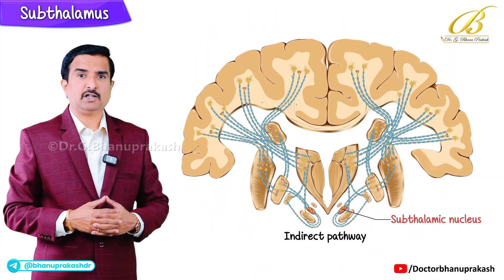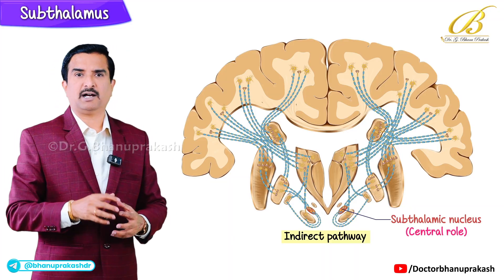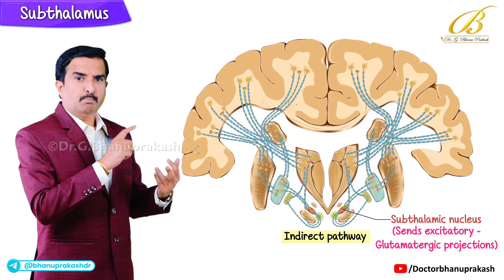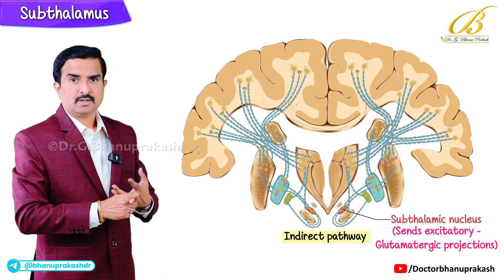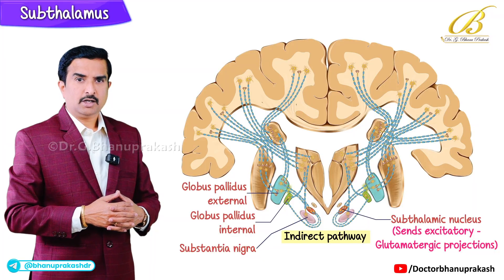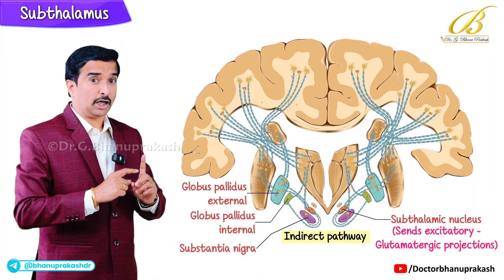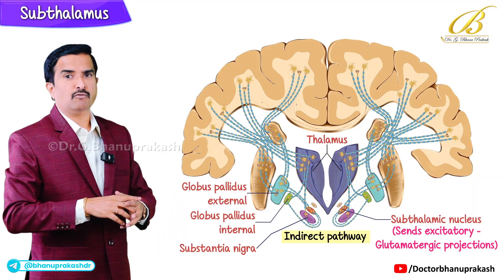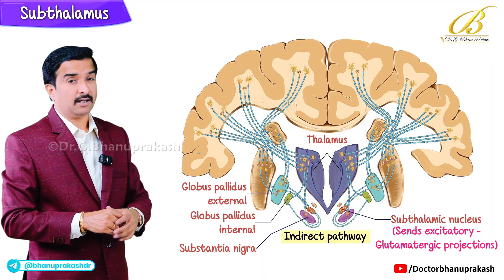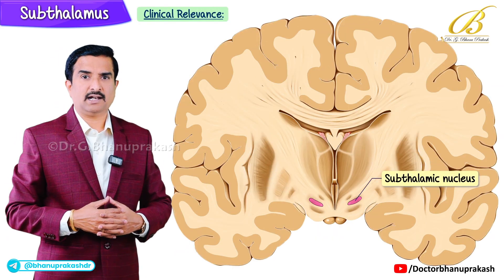The subthalamic nucleus plays a central role in the indirect pathway. It sends excitatory — that is, glutamatergic — projections to both segments of the globus pallidus (the globus pallidus externa and interna) and the substantia nigra. These excitatory signals help increase inhibitory output from the basal ganglia to the thalamus, resulting in reduced movement, acting as a brake on unnecessary motor activity. That is why it is a key component of the indirect pathway.